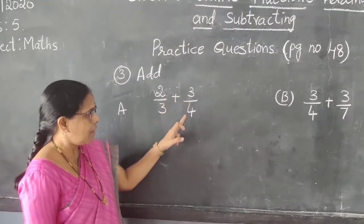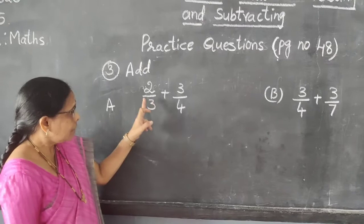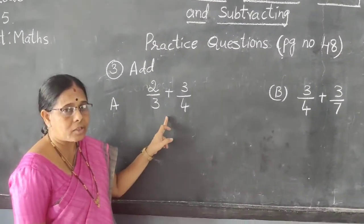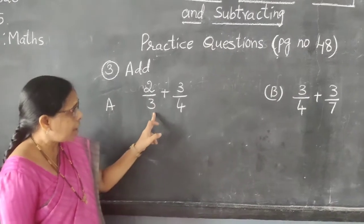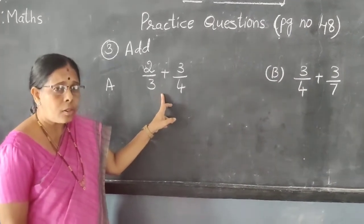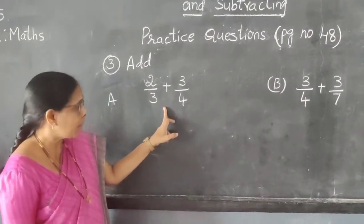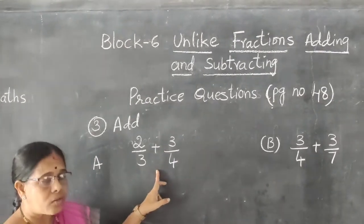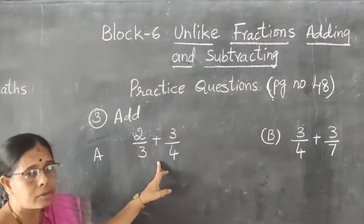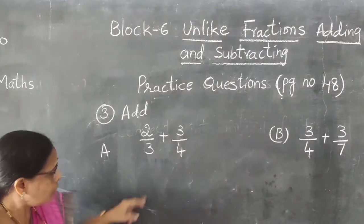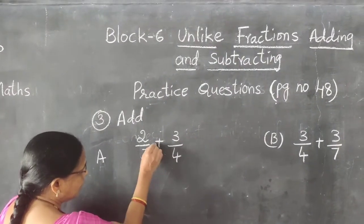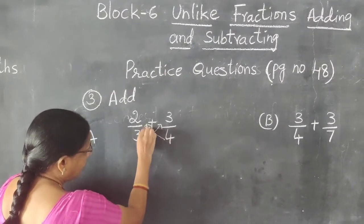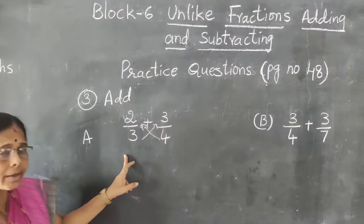The third bit: add 2/3 and 3/4. The mixed fractions have been changed — these are unlike fractions. So we are adding unlike fractions. What do we have to do? First, we have to make them like fractions. For making like fractions, we use cross multiplication.